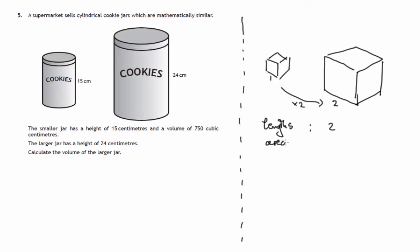For the areas, we're multiplying by 4. So there's an area of 1, we now have an area of 4. So for the areas, we're multiplying by 4.